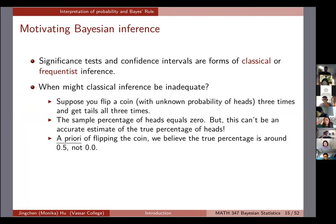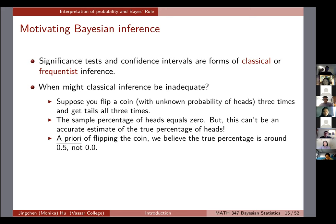To motivate Bayesian inference, the things you've probably heard in the past — significance tests, hypothesis tests, and confidence intervals — are actually forms of classical, or frequentist, inference. Sometimes they might not be adequate. As a toy example: suppose you flip a coin, not knowing the probability of heads, three times, and get tails all three times. You don't know the success probability p.